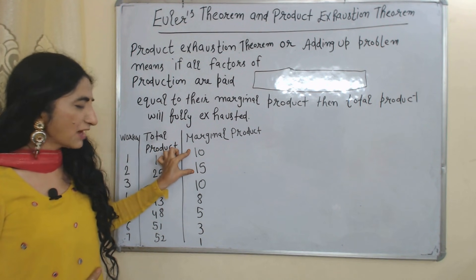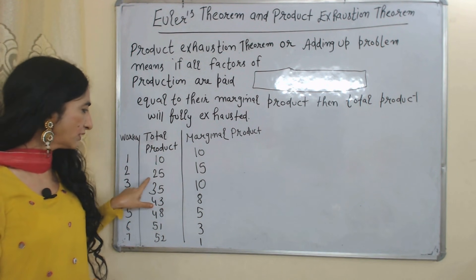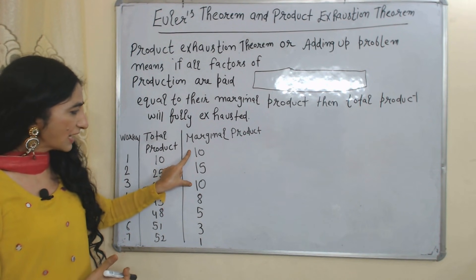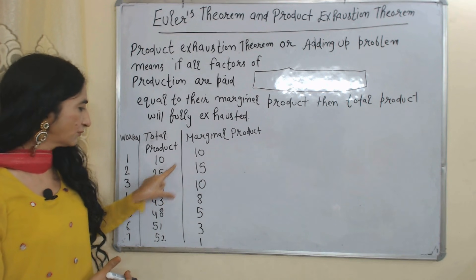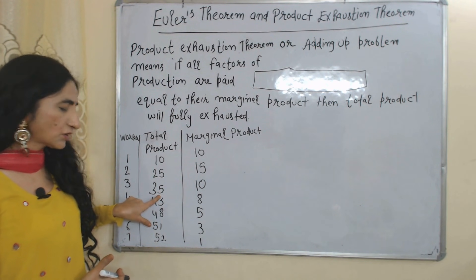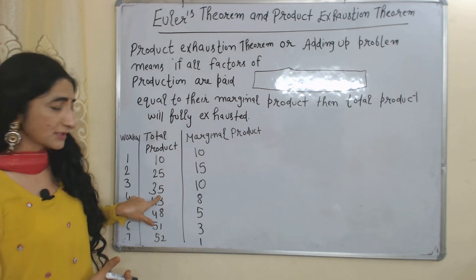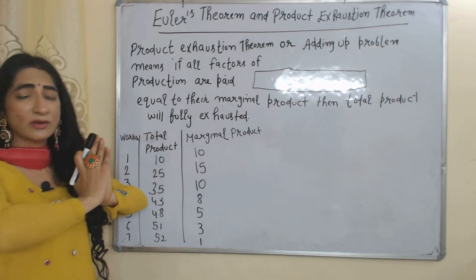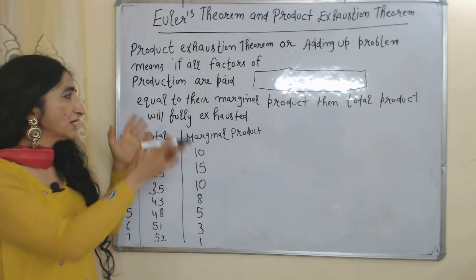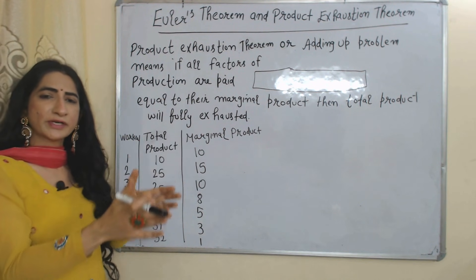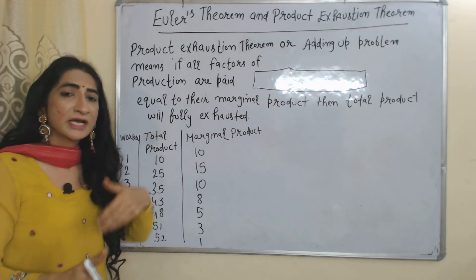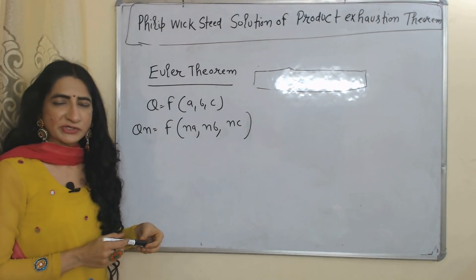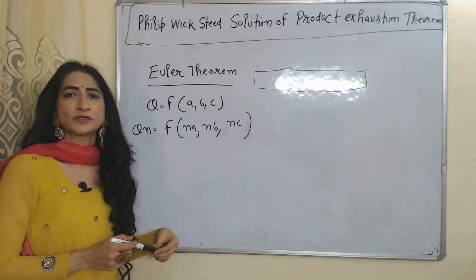If we add the marginal product of two workers, it becomes equal to the total product of two workers. Similarly, if we add the marginal product of three workers, it becomes equal to the total product of three workers. So total product is made of marginal product. That's why, according to the Product Exhaustion Theorem, if we pay all factors of production according to their marginal product, then total product will be fully exhausted.